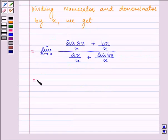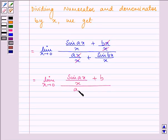Further, on simplifying, we have limit x approaches 0, sin ax upon x plus b, the whole divided by a plus sin bx upon x. Now taking the limits to numerator and denominator separately,